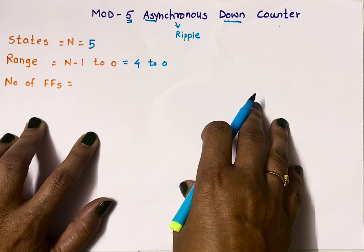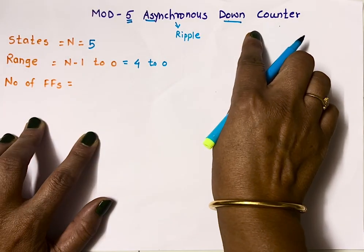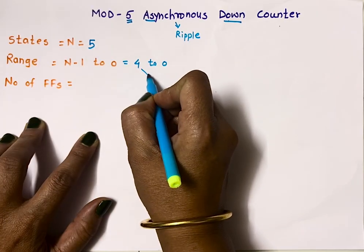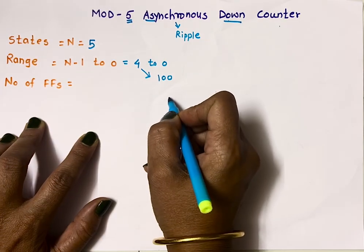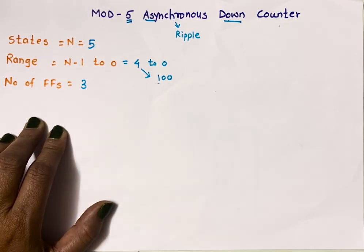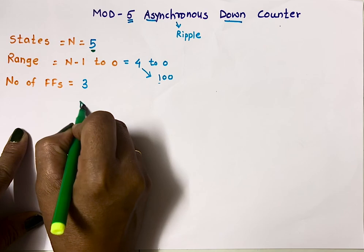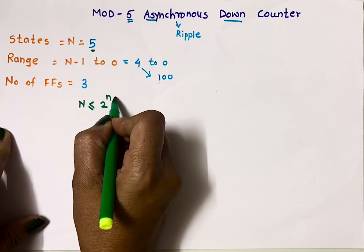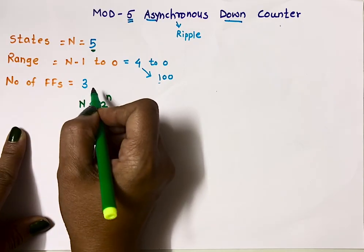When we design a counter we need flip-flops. The first step is to identify how many flip-flops are needed. One method: the maximum count is 4; to write 4 in binary it's 100, so we need 3 bits, meaning 3 flip-flops. Another method: N must be less than or equal to 2 raised to n, where small n indicates the number of flip-flops. If we put 3, it satisfies the condition, so 3 flip-flops are needed.